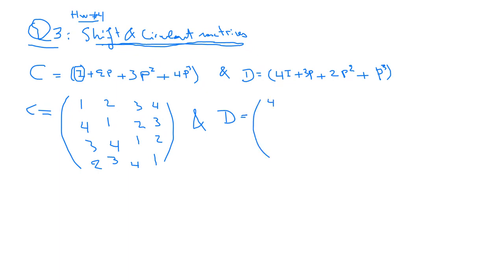For matrix D, we have 4 on the diagonal because we have 4I. Then 3P so we have 3's, and 2P squared. Completing the circulant structure we have 1's, then 2's and 3's in the appropriate positions. So this is C and D.